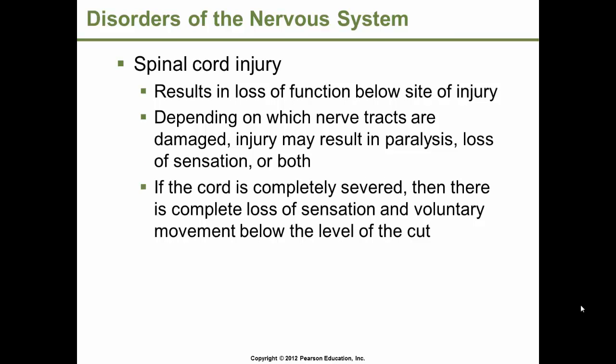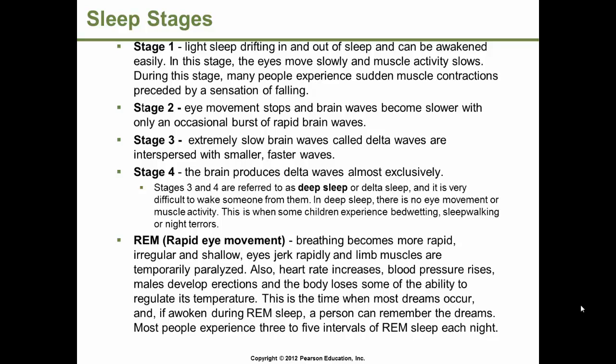Spinal cord injury results in loss of function below the site of the injury. Depending on which nerve tracts are damaged, injury may result in paralysis, loss of sensation, or both. If the cord is completely severed, there is complete loss of sensation and voluntary movement below the level of the cut. There are several stages of sleep: stages 1, 2, 3, 4, and rapid eye movement. REM sleep is a time when breathing becomes more rapid, irregular, and shallow, the eyes jerk rapidly, and limb muscles may be temporarily paralyzed. Infants spend about 50% of their sleep time in REM, while adults spend about 50% in stage 2 and about 20% in REM.